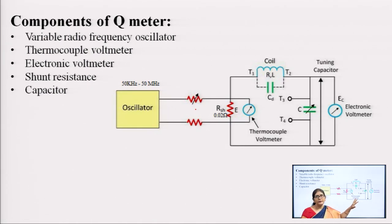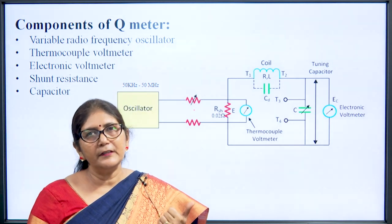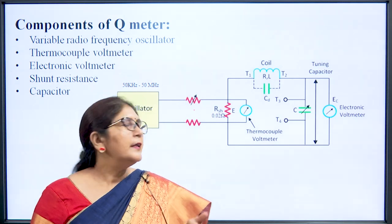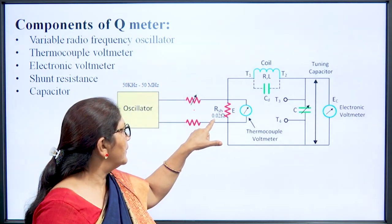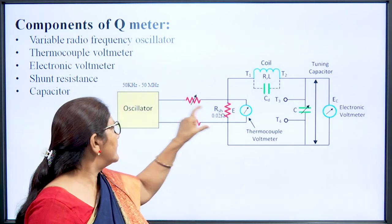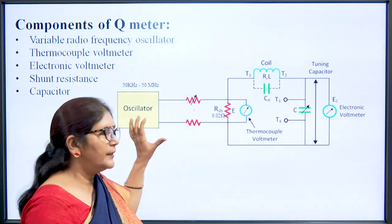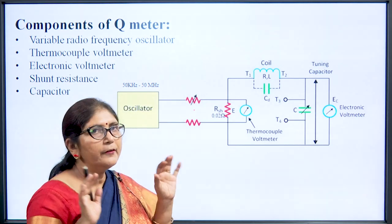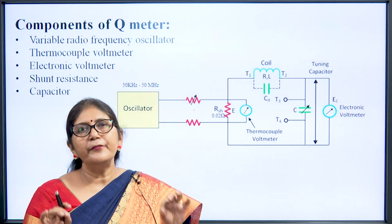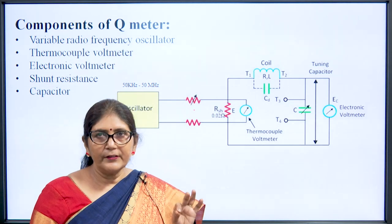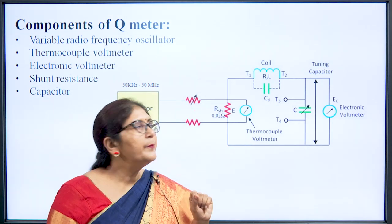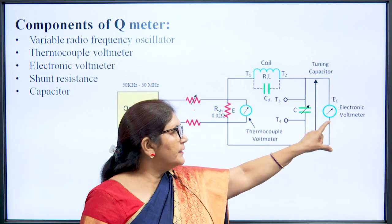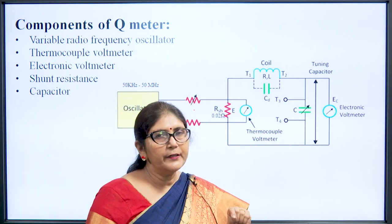The Q meter used in laboratories consists of an oscillator which can produce a frequency of 50 kilohertz to 50 megahertz. There is a very low value shunt resistance RSH of 0.02 ohm connected across the oscillator. A meter is connected across RSH to read the voltage drop — this voltmeter is of thermocouple type. Across the capacitor, an electronic voltmeter is connected and this meter is calibrated in terms of Q, so it directly displays the value of Q.